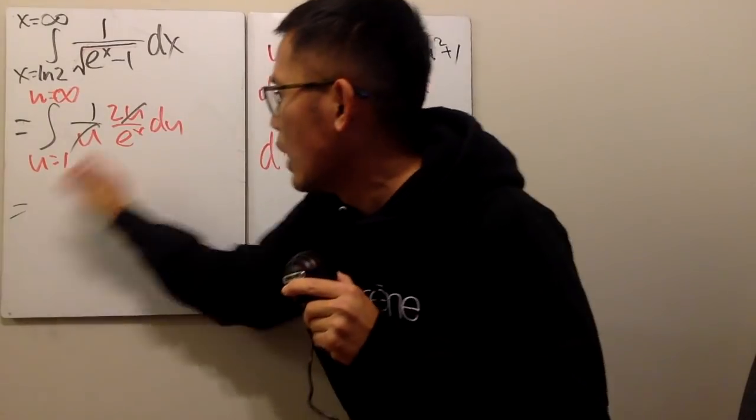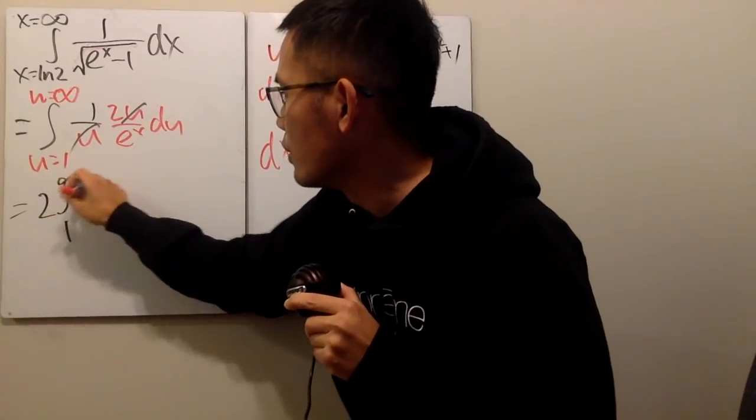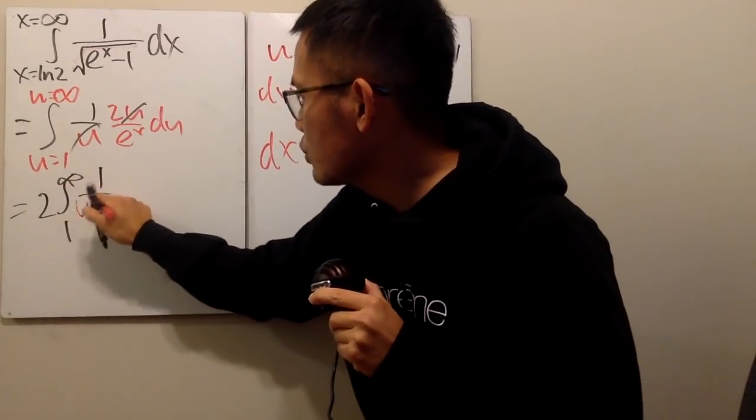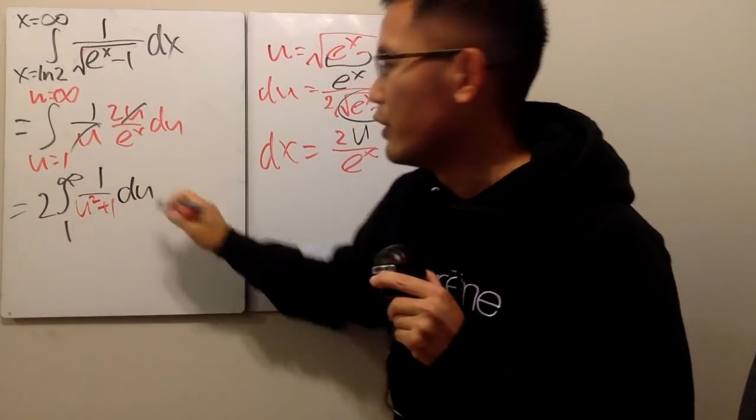Now that's good. Put it back. You see that I'll put the 2 in front. We have the integral from 1 to infinity, and then we have 1 over e to the x, which is u squared plus 1, and we are in the u world.